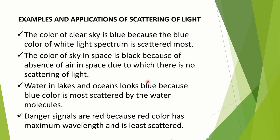Students, let us see examples and applications of scattering of light. The color of the clear sky is blue because the blue color of the white light spectrum is scattered the most. The color of the sky in space is black because of the absence of air in space, due to which there is no scattering of light. Water in lakes and oceans looks blue because blue color is most scattered by the water molecules.